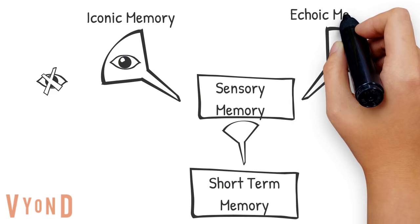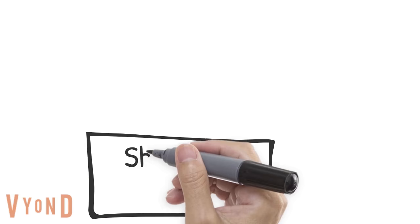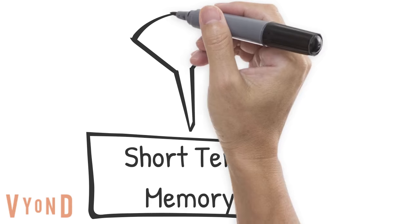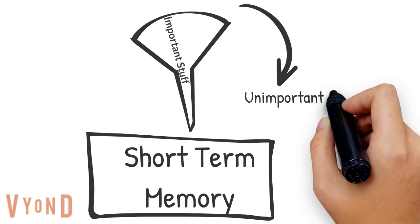Your short-term memory does not hold a lot of information, so it can get overwhelmed when it experiences lots of sensory information all at once. The process of filtering out all that information so only the important information gets into your short-term memory is called selective attention.